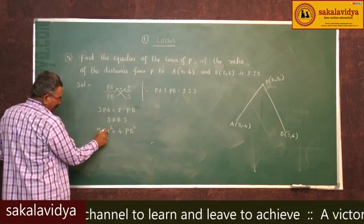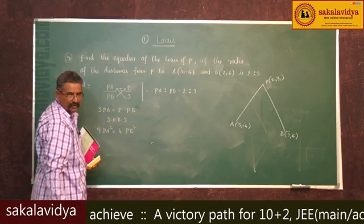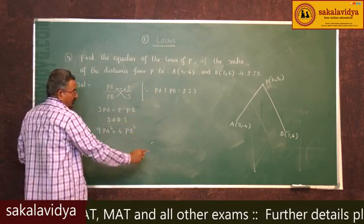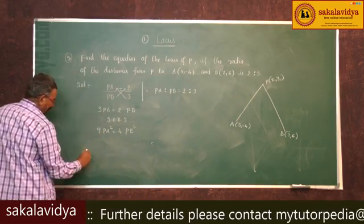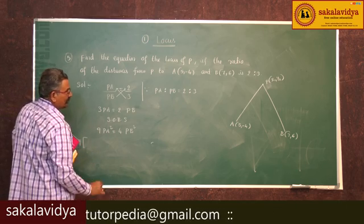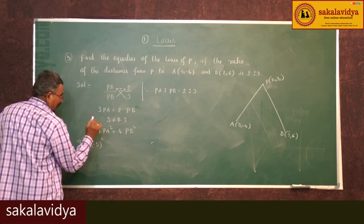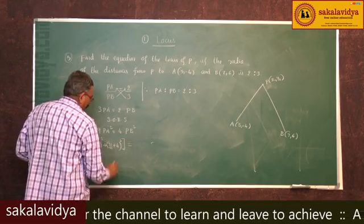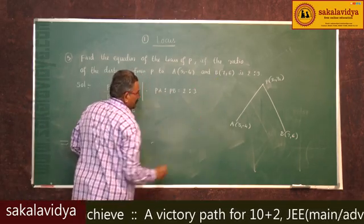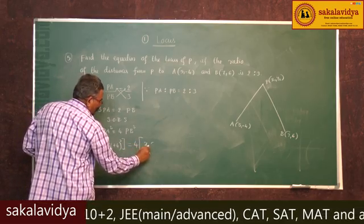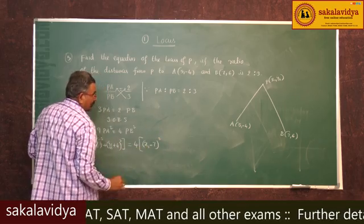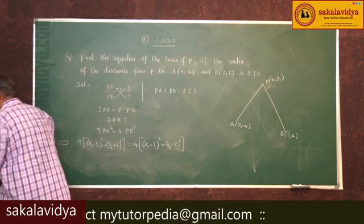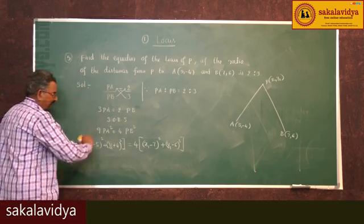Let us write the square of the distances PA² and PB². PA² can be written as (x1 - 5)² + (y1 + 4)², so we get 9 times (x1 - 5)² + (y1 + 4)² equals 4 times (x1 - 7)² + (y1 - 6)². Now let us simplify the left-hand side as well as the right-hand side.